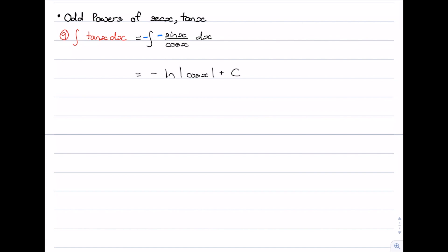Now this is fine, you could stop here if you wanted to, but we can do a little bit more using log laws. The negative one coefficient of the log can be brought up into the power, so this will be log of cos x to the power negative one, which is just the reciprocal of cos x, and we know that is sec x. So this gives you a bit of a neater way of writing it, and that is your final answer.